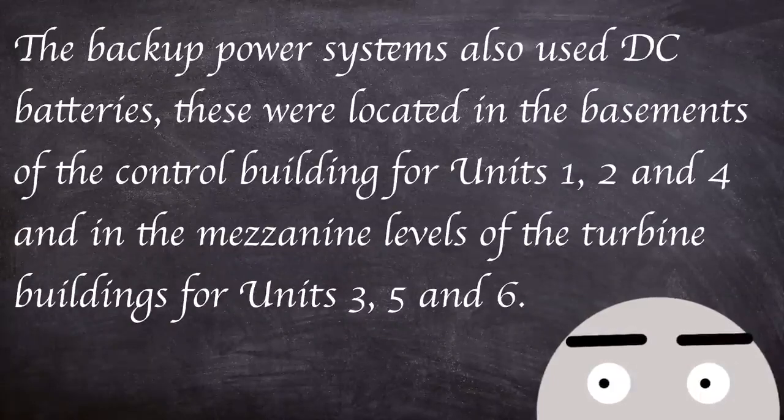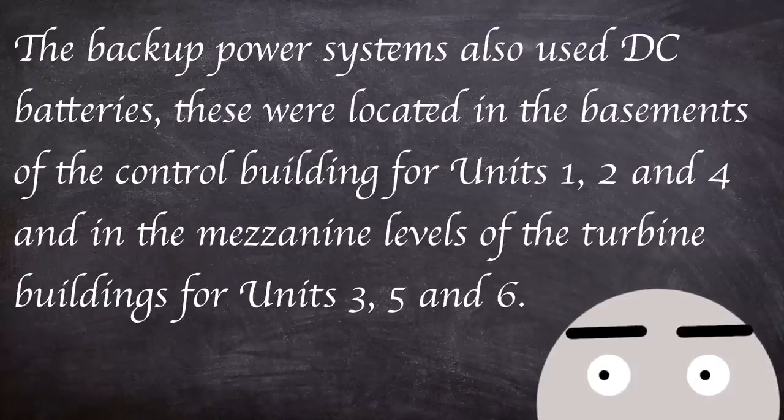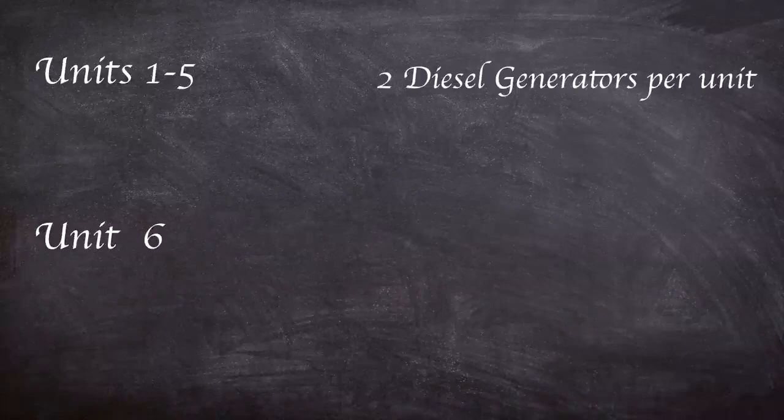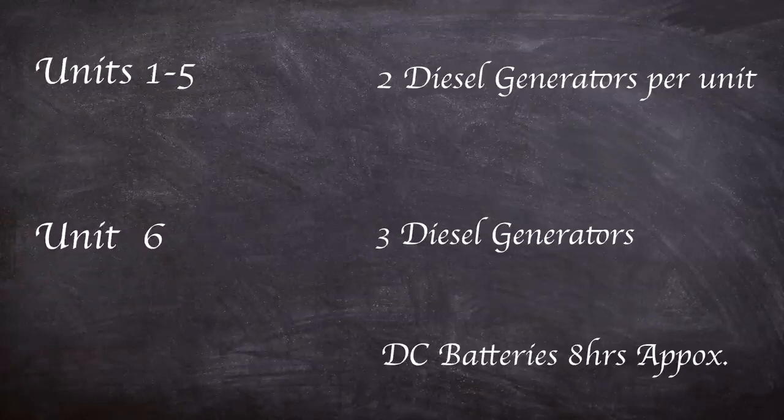The backup power systems also used DC batteries located in basements of control buildings for units 1, 2, and 4, and in mezzanine levels of turbine buildings for units 3, 5, and 6. Units 1 to 5 had two diesel generators each; unit 6 had three. The batteries gave up to eight hours of emergency power in case of grid isolation.